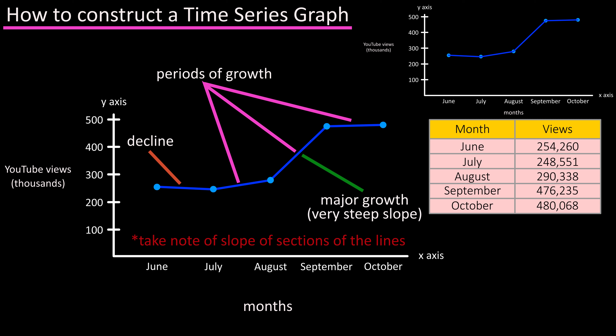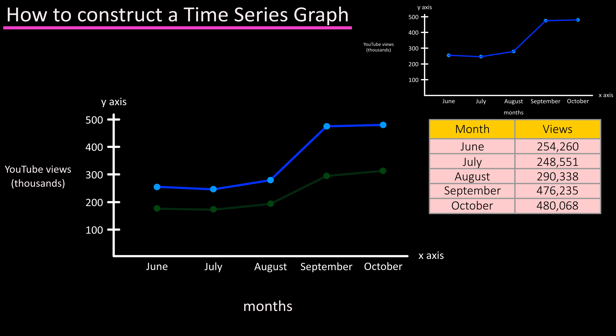You can also compare two data sets in the same graph, as you see here with a line for video views for 2019 and a line for video views for the same time period for 2018.